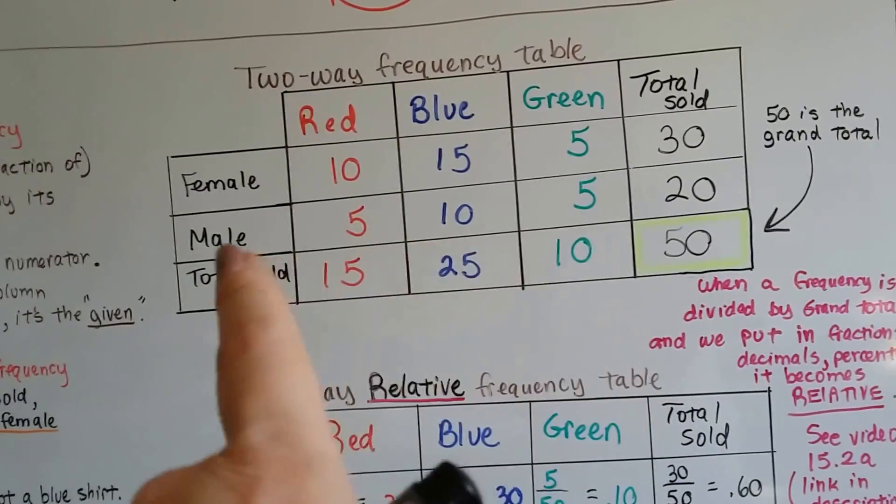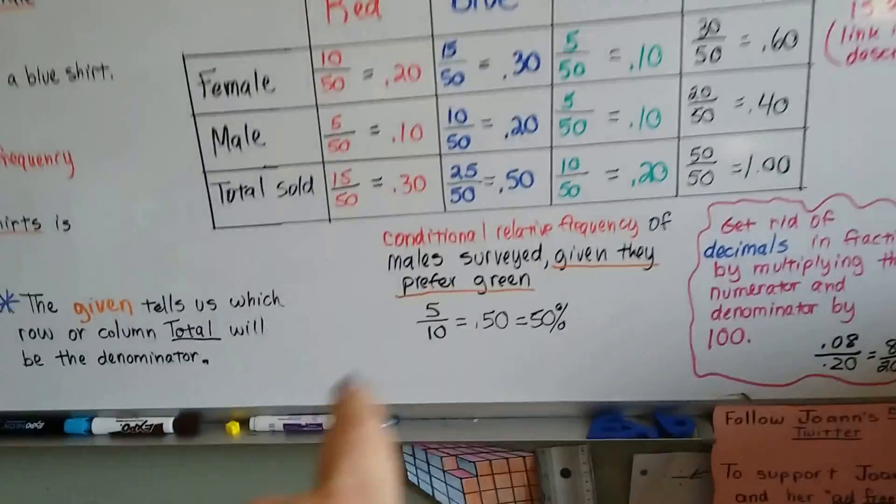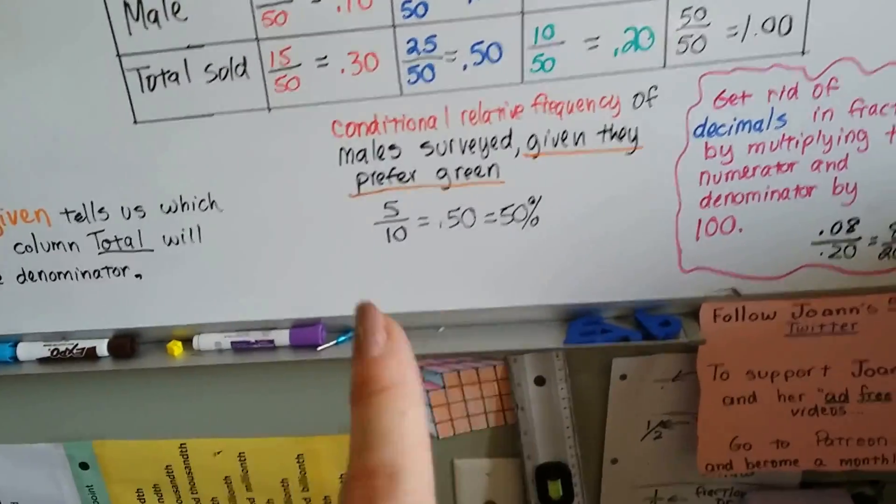And males that bought a green one. Well, that's 5. So we've got 5 over 10, which is 50%.